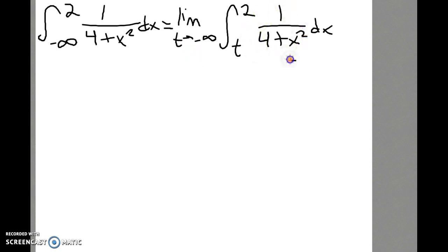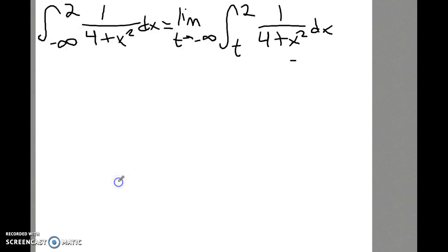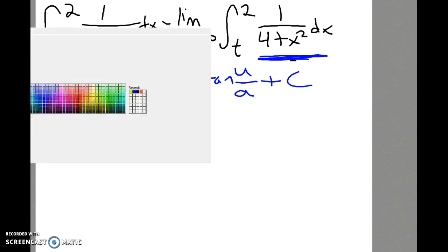The limit comes at the very end. So we start with: what's the antiderivative of 1 over 4 plus x squared? You may recall you could use one of your formulas from chapter 5. The integral of 1 over a squared plus u squared du is equal to 1 over a arc tangent of u over a.